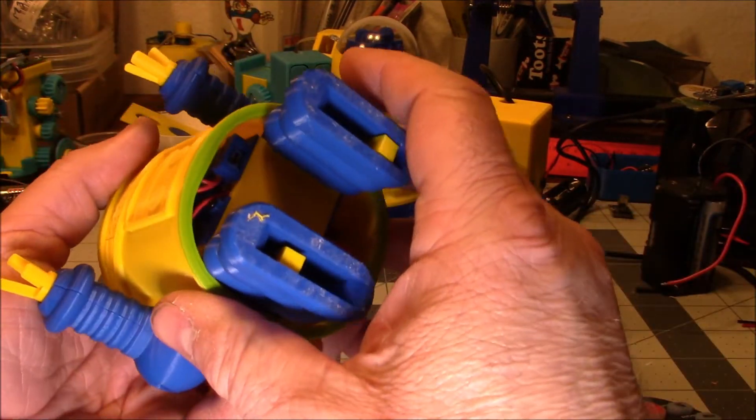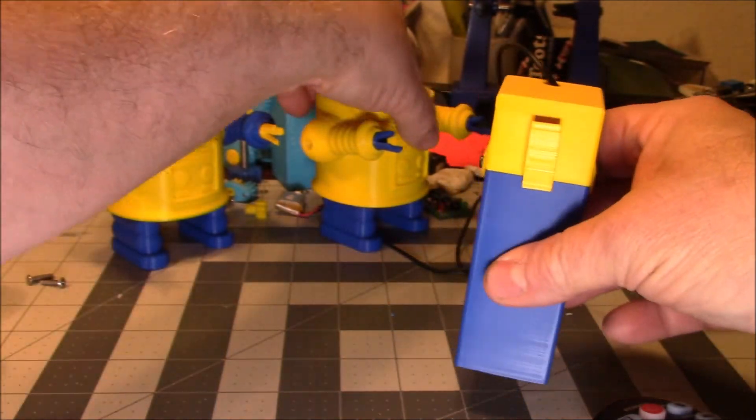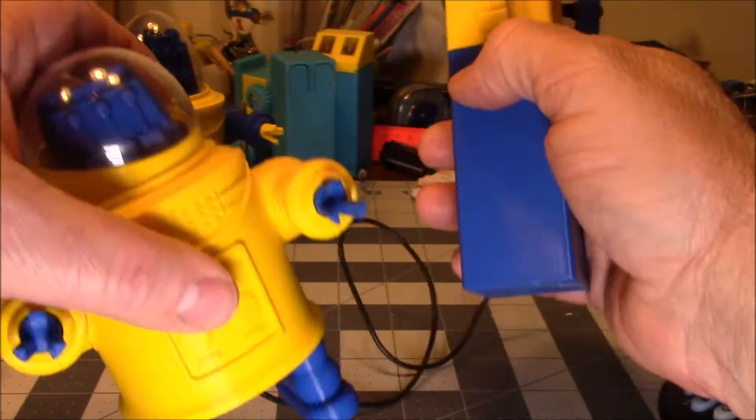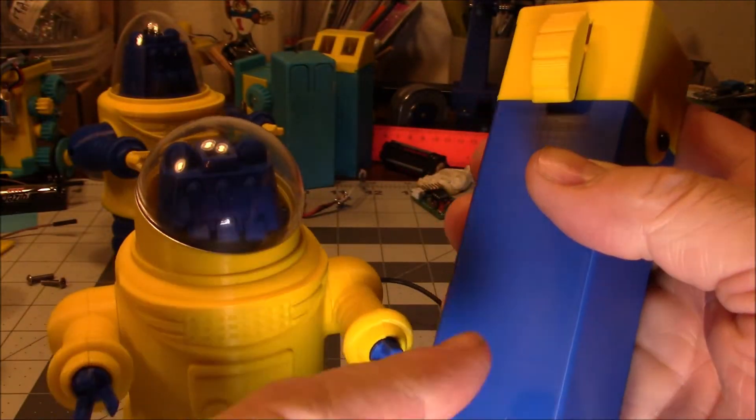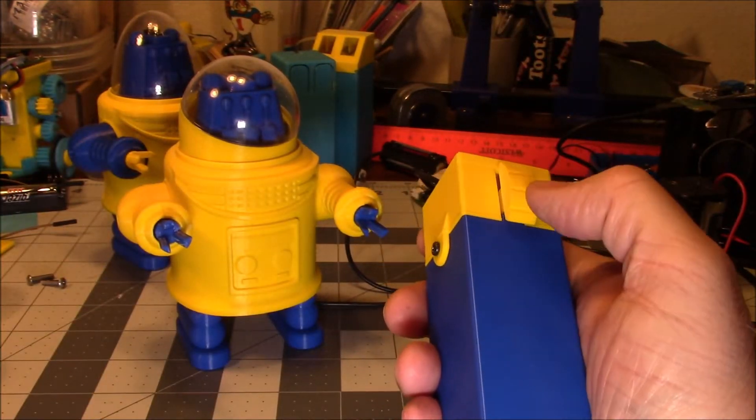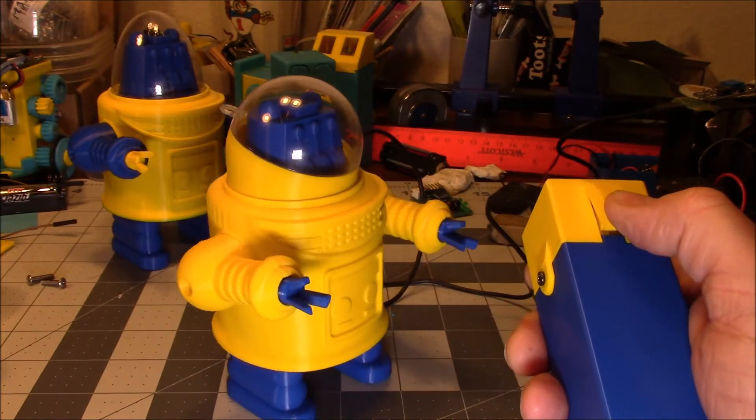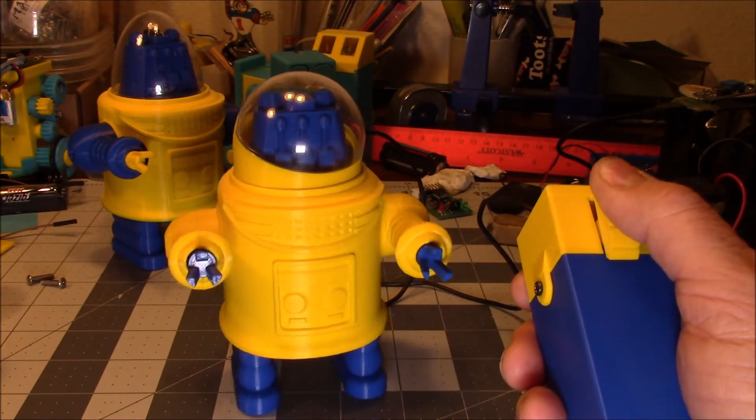You have a version. Let me turn this off. This wired remote version just has four double A's in the switch box here. Forward, works forward. Motor runs in reverse, it spins.